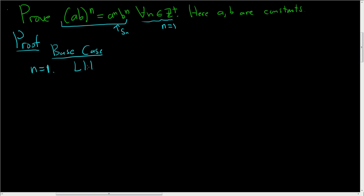So on the left-hand side, we just get ab to the first power, so that's ab. On the right-hand side, we just get a to the 1, b to the 1, which is also ab. Sure enough, the left-hand side is equal to the right-hand side, so s sub 1 is true. We have shown that the base case is true.